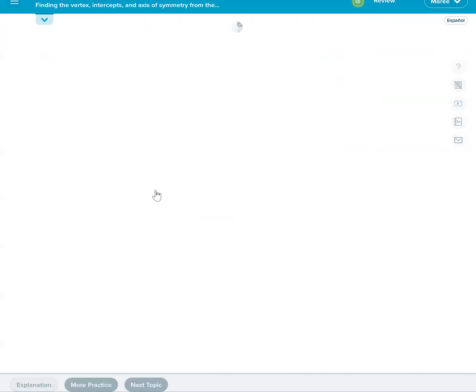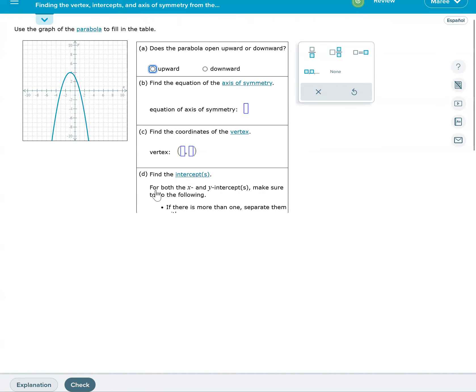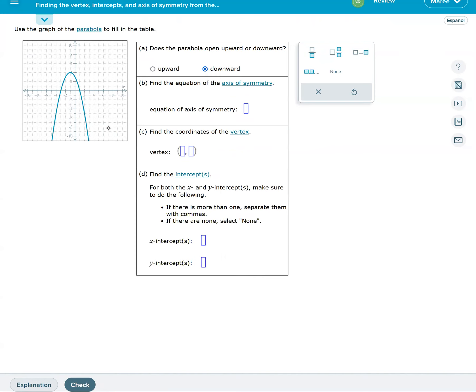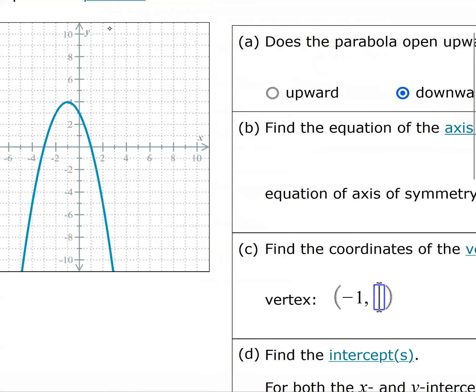Let's do one more. It's opening downward. The axis of symmetry is x equals -1, yes, -1. The vertex is going to have -1 for its x value, and the y value is basically how high it is, which is a positive 4, so we want a 4 right there.